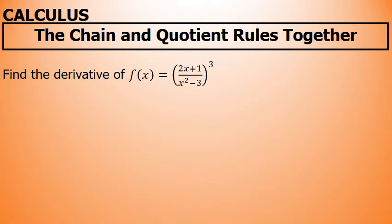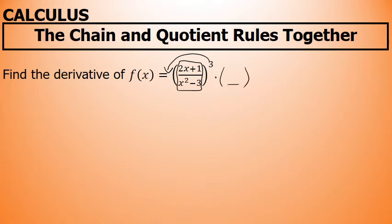This is a situation where the chain rule is required. I have a quantity to a power of 3, and applying the chain rule, I'll be taking the 3 to the front to find this derivative, decrease this power by 1, and then multiply by the derivative of the inside of the quantity — in this case, the derivative of 2x plus 1 over x squared minus 3. That derivative will go here, and to find that derivative, I'll have to do the quotient rule.